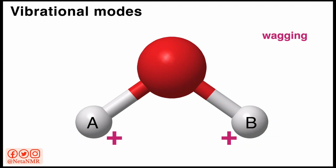The final two vibrational modes are called wagging and twisting. In wagging, both hydrogen A and hydrogen B are coming outside of the screen and then moving back inside at the same time, as indicated by the plus sign next to the two hydrogen atoms. In twisting, while hydrogen A is coming outside of the screen, hydrogen B is moving deep inside, and then they reverse roles. This is indicated by the plus sign and the minus sign next to the two atoms.